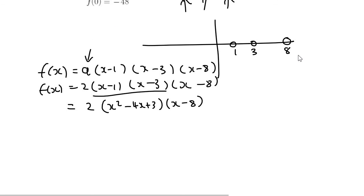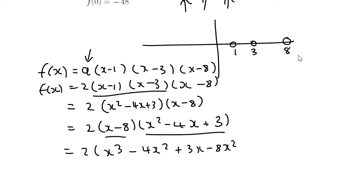Then to make life, I just prefer to make things a little bit easier for myself. I put the x minus 8 in the front. And then what I'm going to do is I'm going to multiply these two together. Minus 8x squared plus 32x minus 24.